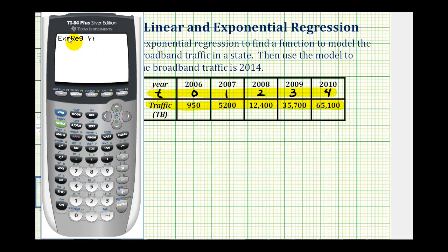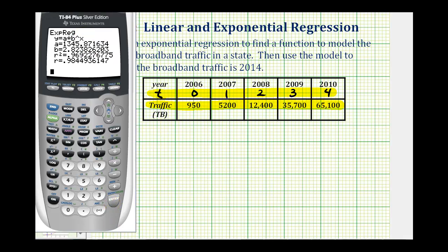So now I'll press enter. Here's the value of a and b for our exponential function. Notice r squared, the coefficient of determination is very close to one, which means this is a good model for the data. Let's round the values of a and b to four decimal places for our exponential function.